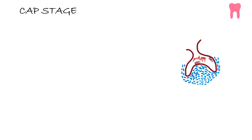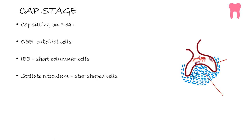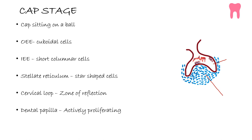In the cap stage, why does the enamel organ occur as a cap? It is because of unequal proliferation of the cells in certain areas and also due to condensation of the ecto-mesenchyme. The key features we need to know in the cap stage are: how the outer enamel epithelium looks, how the inner enamel epithelium looks, how the stellate reticulum looks, what is the cervical loop or zone of reflection, and what is the dental sac or dental follicle.